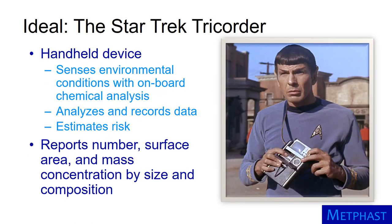Ideally, we need a tricorder as originally seen carried by Spock in a 1960s Star Trek episode. The tricorder is a multifunction handheld device used to sense environmental conditions, analyze and record data, and estimate risk. The use I have in mind for such a device is to report particle number, surface area, and mass concentration by size and by composition. Although we don't have such a device, we do have other instruments that we can use together to assess aerosol exposures.